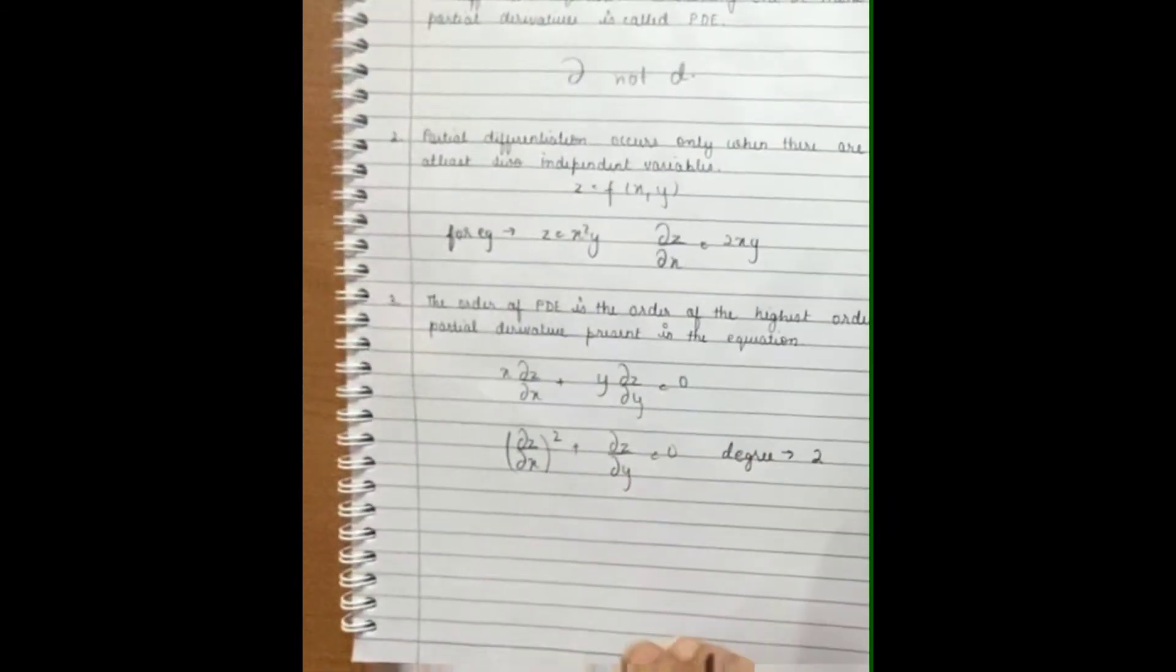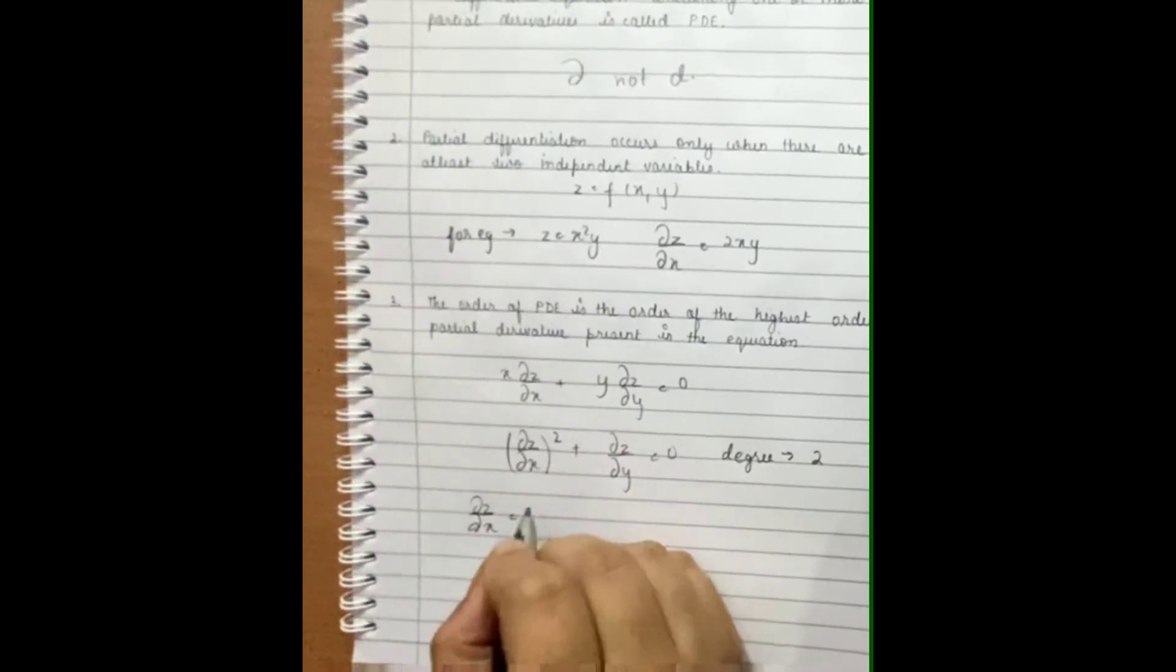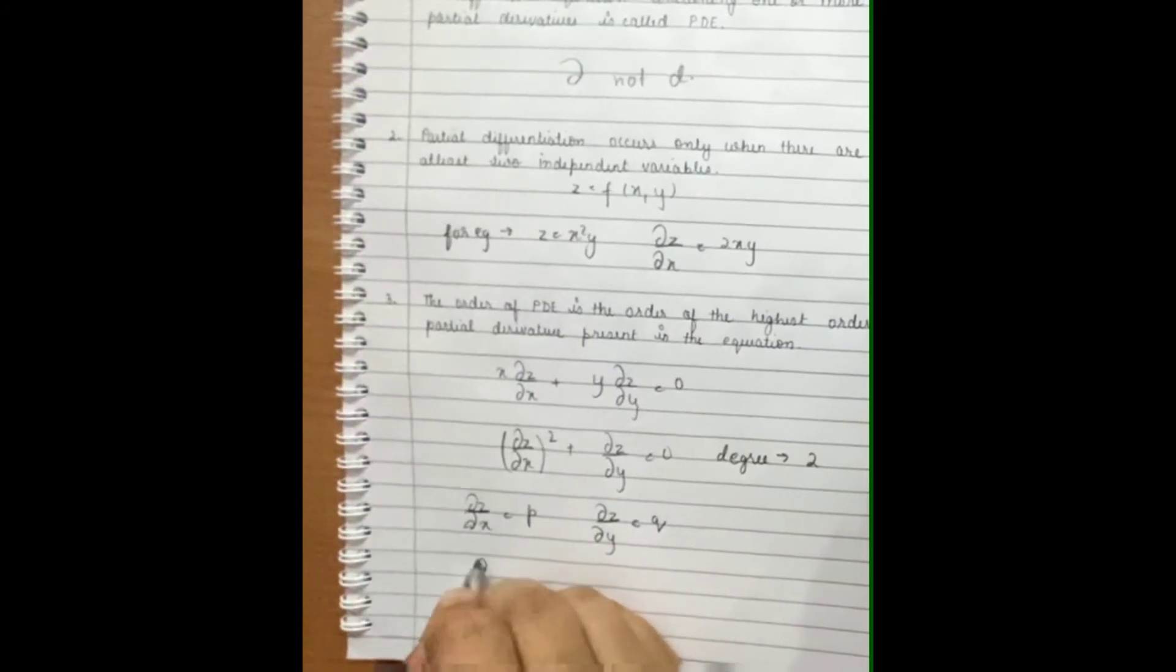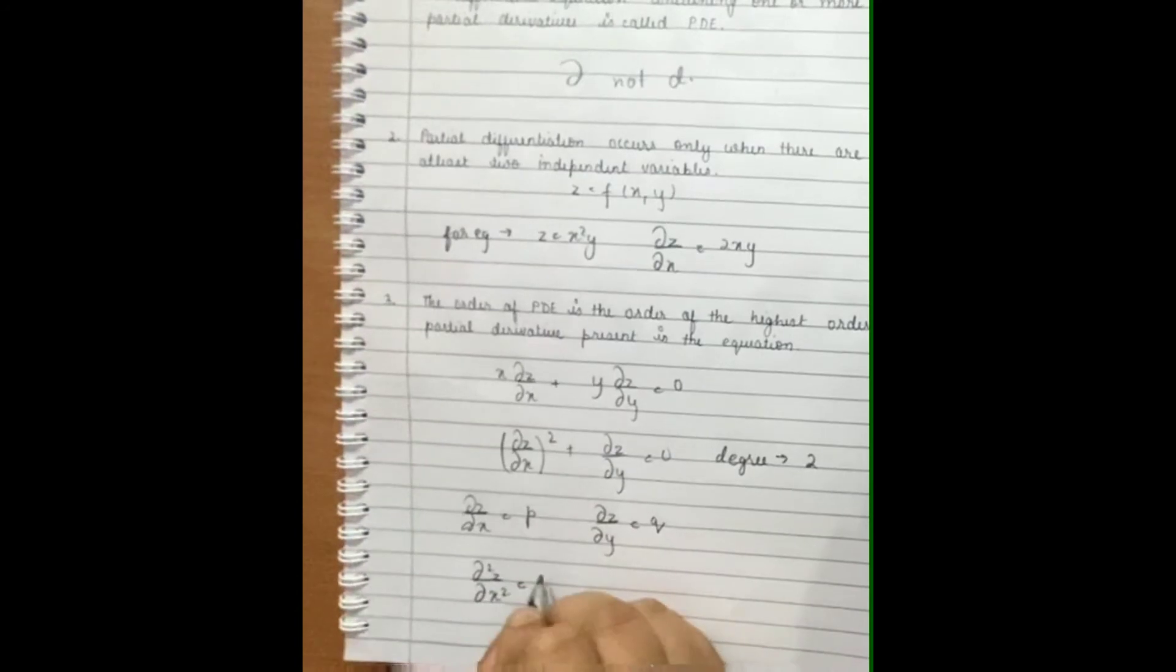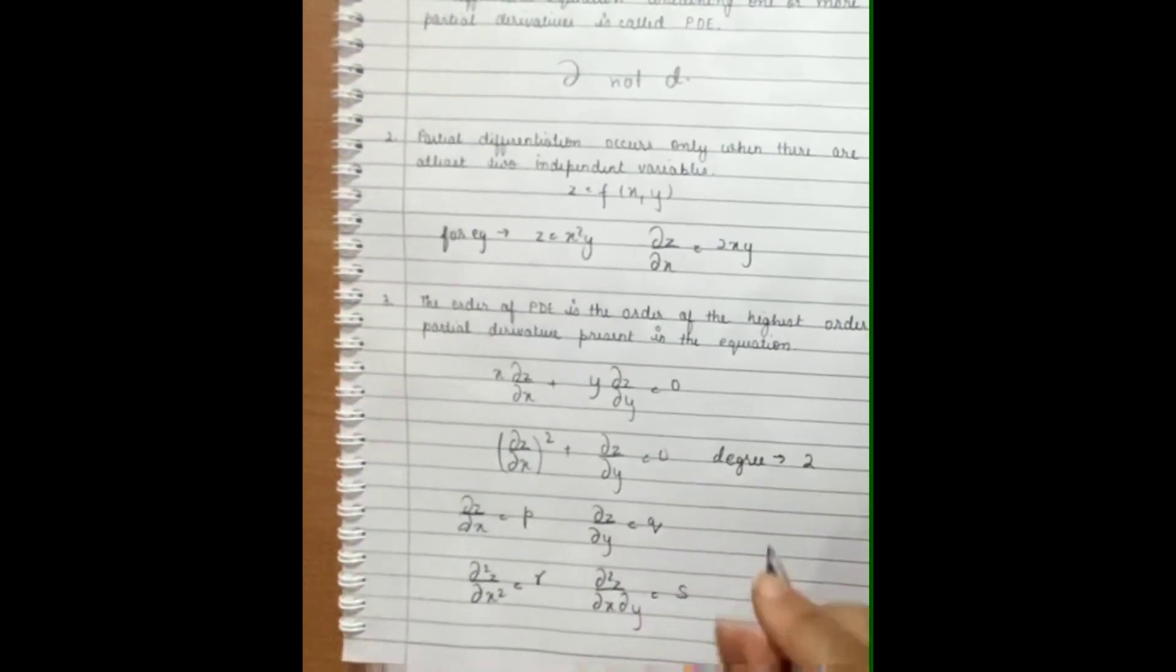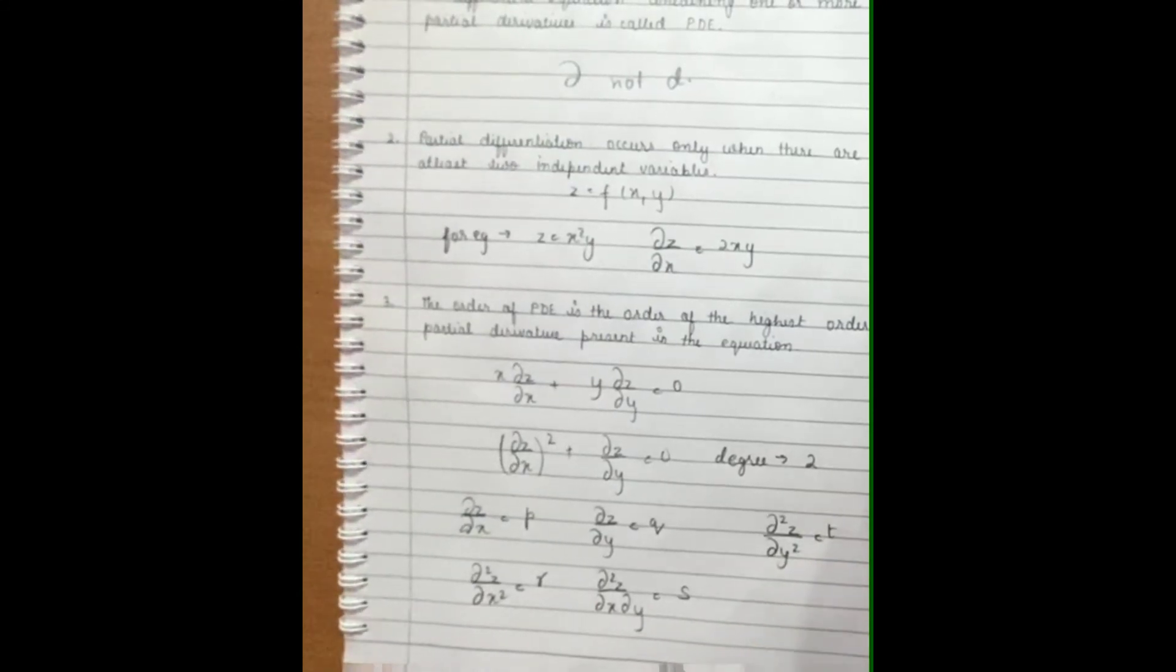Let's get to know some basic terms that we are going to use in future videos. Del Z by del X is represented by P. Del Z by del Y is represented by Q. Del square Z del X square is represented by R. Del square Z del X del Y is represented by S. And finally, del square Z del Y square is represented by T.